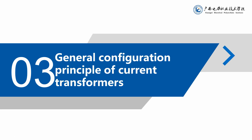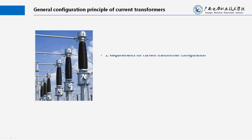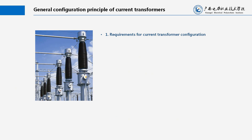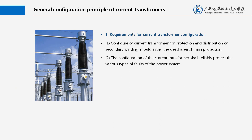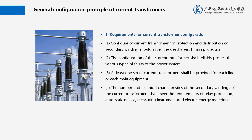General Configuration Principle of Current Transformers. Requirements for Current Transformer Configuration: 1. Configuration of the current transformer for protection and distribution of secondary winding should avoid the dead area of main protection. 2. The configuration shall reliably protect the various types of faults of the power system. 3. At least one set of current transformers shall be provided for each line or each main equipment. 4. The number and technical characteristics of the secondary windings shall meet the requirements of relay protection, automatic device, measuring instrument and electric energy metering.